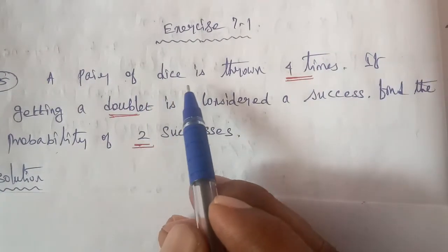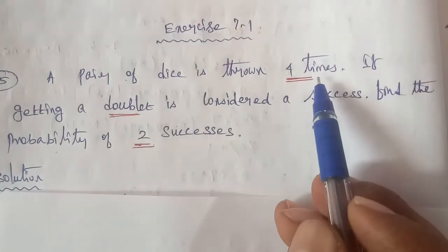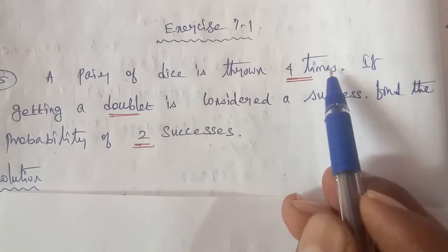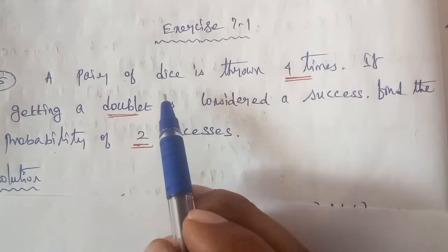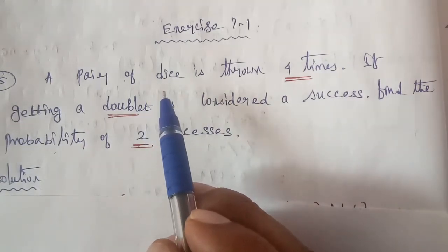So, one pair of dice is thrown four times. So if you look at it, n is equal to 4 given in the question. If you look at a pair of dice, the sample space is 36.